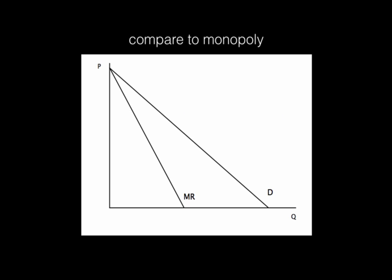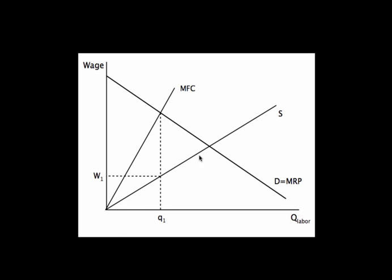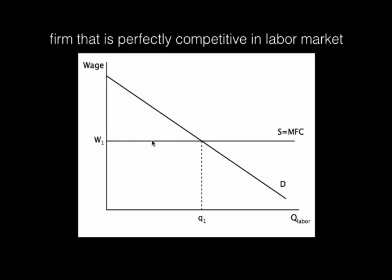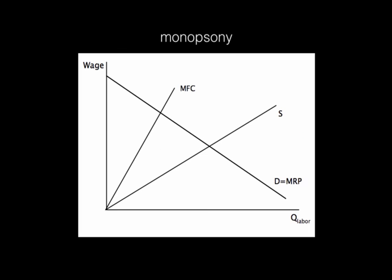There's a price effect happening in terms of wages — marginal factor cost has the same kind of relationship to the supply curve as marginal revenue does to demand. I keep raising the wage, but I have to raise it for everyone, and that wage effect gets bigger the more workers I'm hiring. Back when I was perfectly competitive in the labor market, I was a wage taker — adding one more worker had no wage effect.